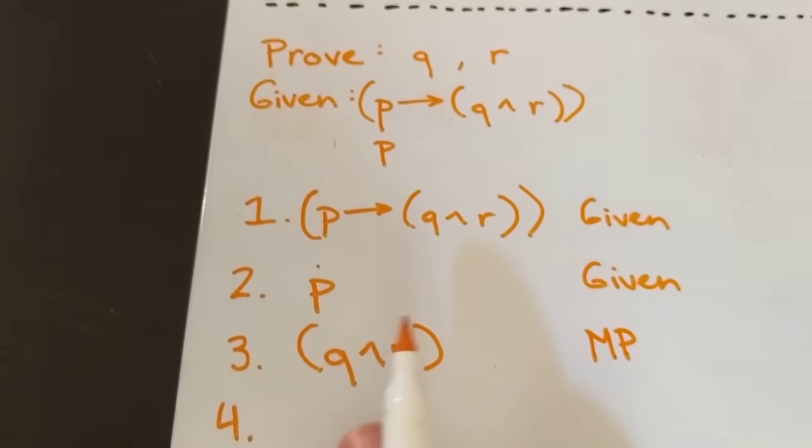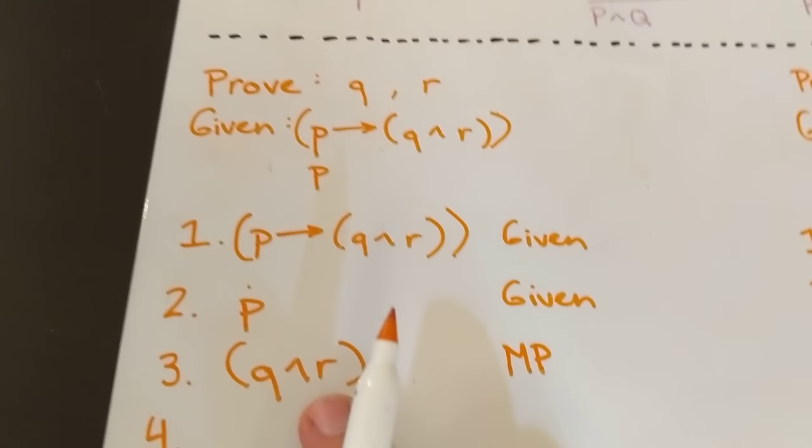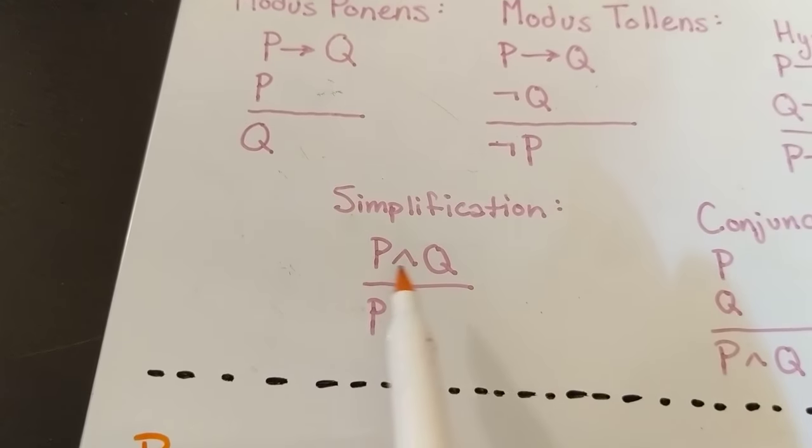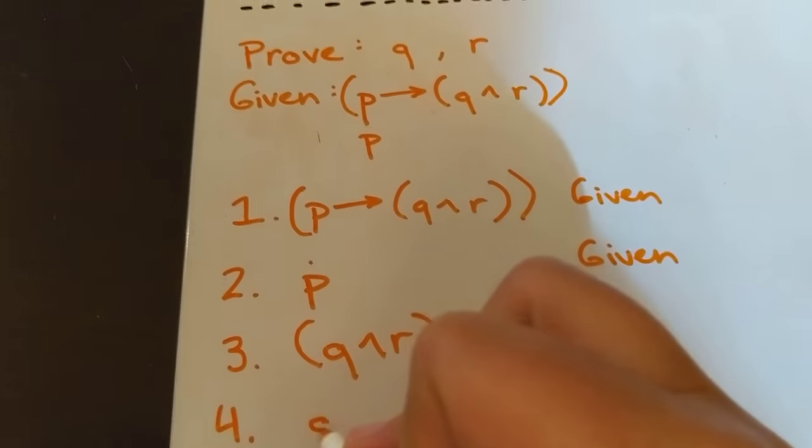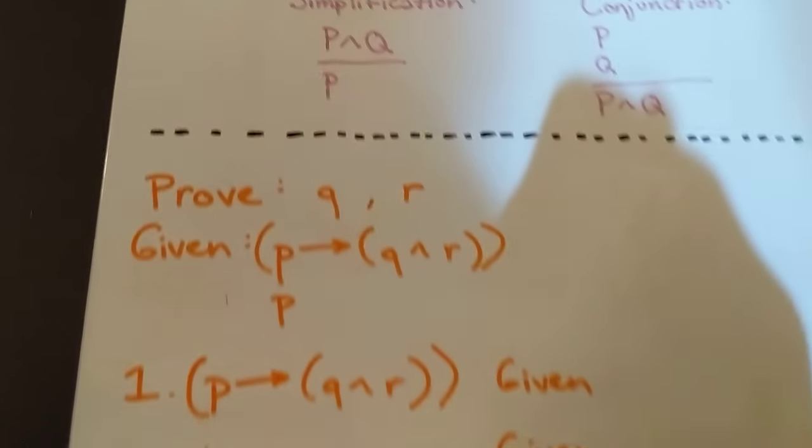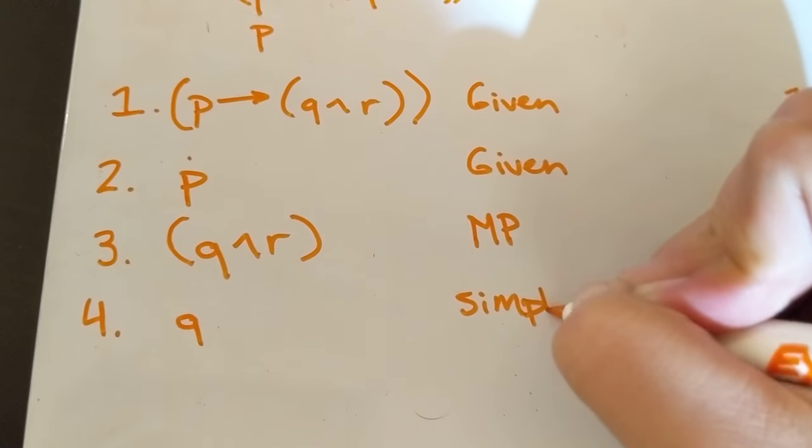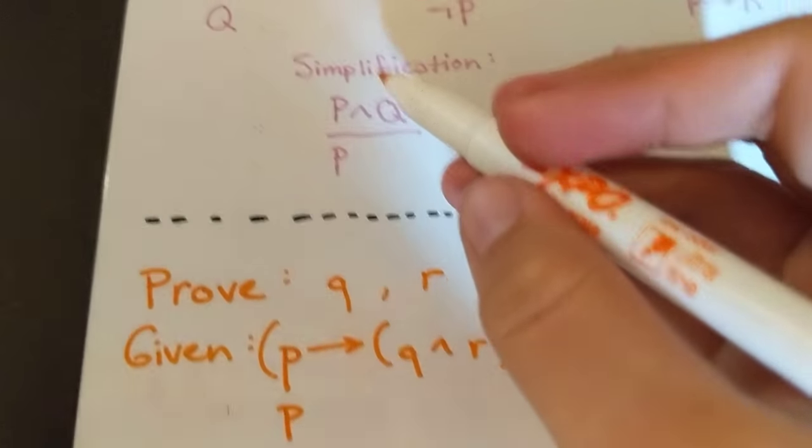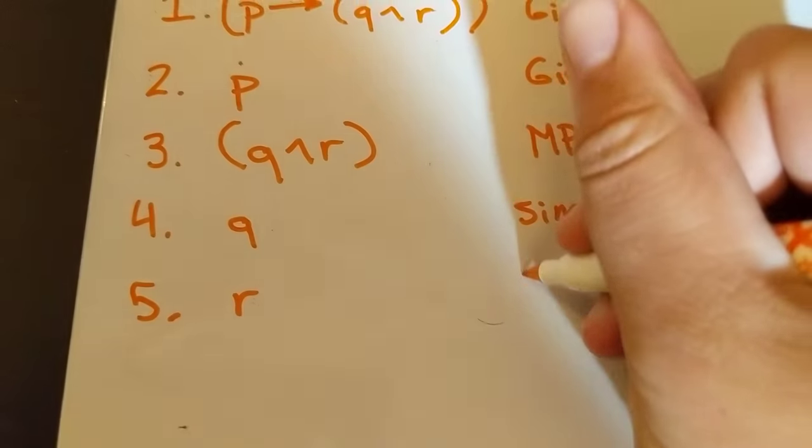Our next step is going to be to conclude, we want to be able to conclude that Q is true and R is true separately, and luckily enough, we have this lovely little simplification rule that says that if the and is true, then each one of those is true. So we have to do this twice. So the first one, we conclude Q based on simplification. And the second one, we're going to conclude that R is true based on simplification.